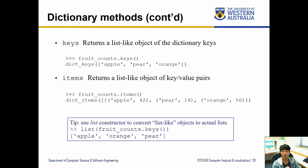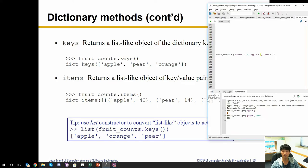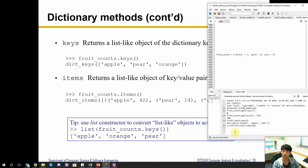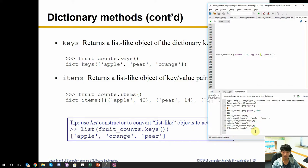The `keys()` method returns a list-like object of the dictionary's keys. For example, `fruit_counts.keys()` gives us only the keys. This is of type 'dict_keys', not exactly a list. If you need a proper list, you can pass it into the `list()` constructor — always check types if you're unsure.